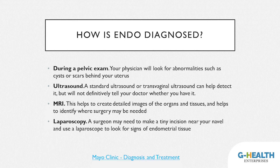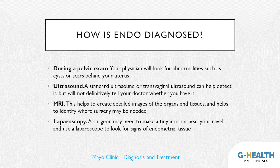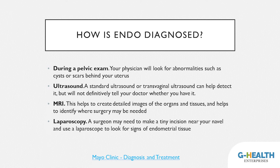Endometriosis is diagnosed in a couple of ways. It can be diagnosed during a pelvic exam, where your physician will look for abnormalities such as cysts or scar tissues. It can be detected during an ultrasound — either a standard or transvaginal ultrasound — though this will not definitively confirm the diagnosis. It can also be detected via an MRI, which creates detailed images of organs and tissues and can help identify where surgery might be needed. Lastly, it can be diagnosed via a laparoscopy, where a surgeon makes a tiny incision near your belly button and uses a laparoscope to look inside for signs of endometrial tissue.